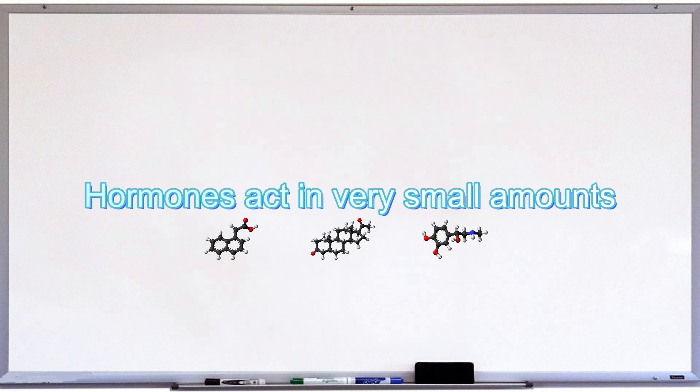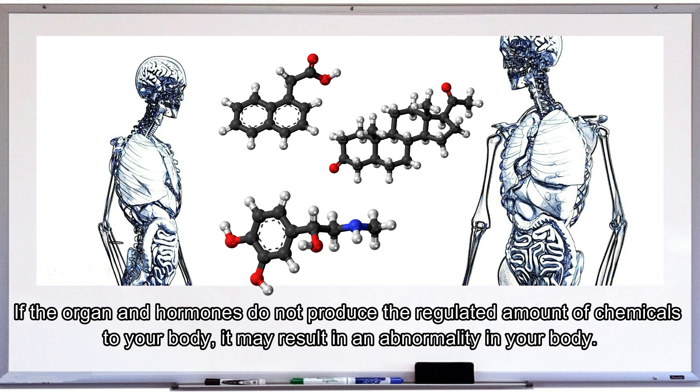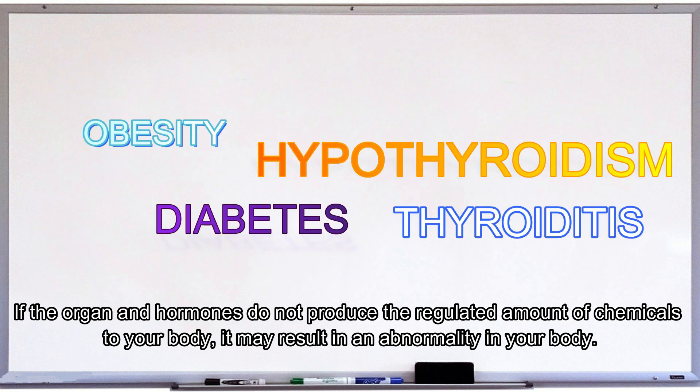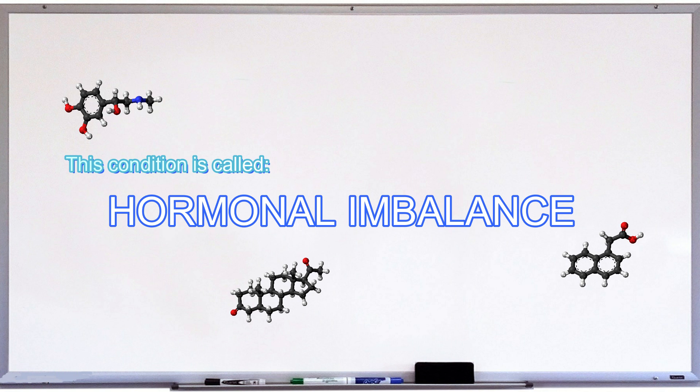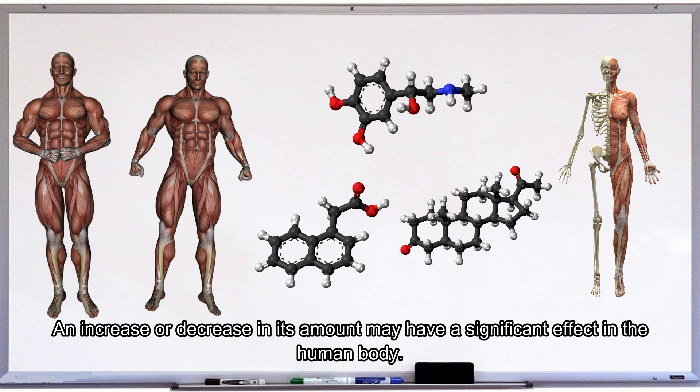Hormones act in very small amounts. If organs and glands do not produce the regulated amount of chemicals to your body, it may result in an abnormality. This condition is called hormonal imbalance. An increase or decrease in its amount may have a significant effect in the human body.